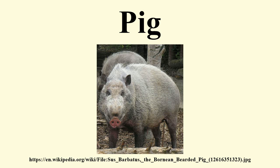Diet and Foraging: Pigs are omnivores, which means that they consume both plants and animals. In the wild, they are foraging animals, primarily eating leaves, grasses, roots, fruits, and flowers. In confinement, pigs are fed mostly corn and soybean meal with a mixture of vitamins and minerals added to the diet. Traditionally, they were raised on dairy farms and called mortgage lifters, due to their ability to use excess milk as well as whey from cheese and butter making combined with pasture. Older pigs will consume three to five gallons of water per day.